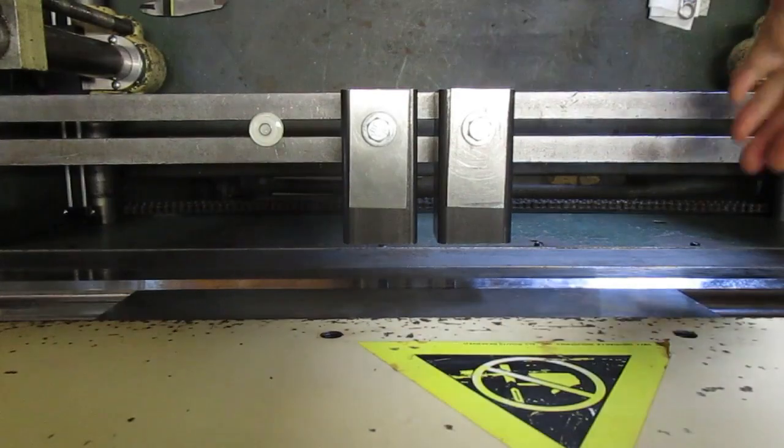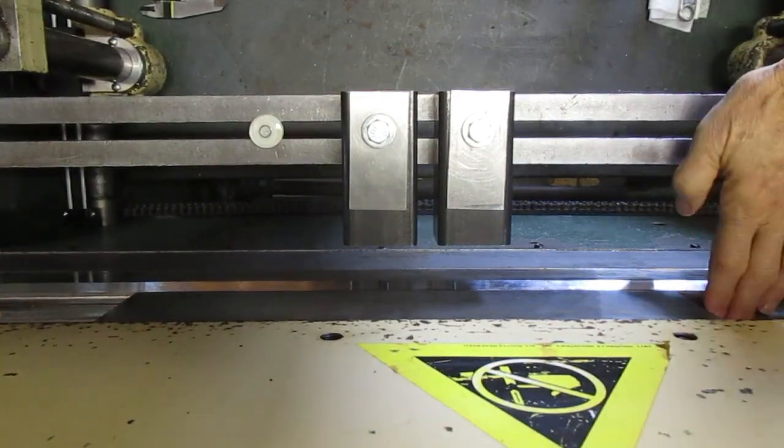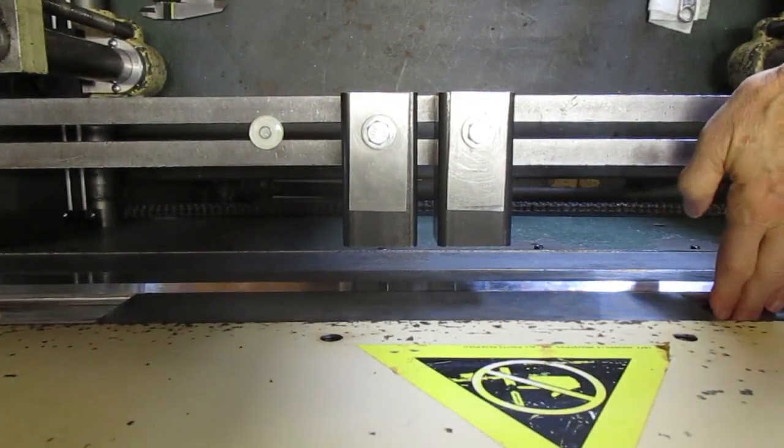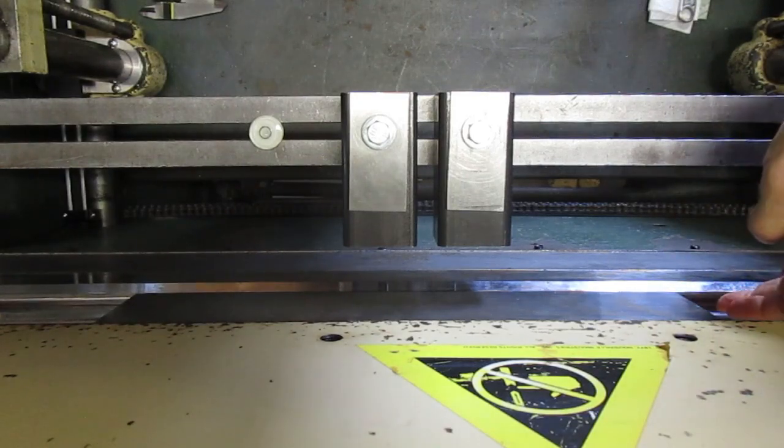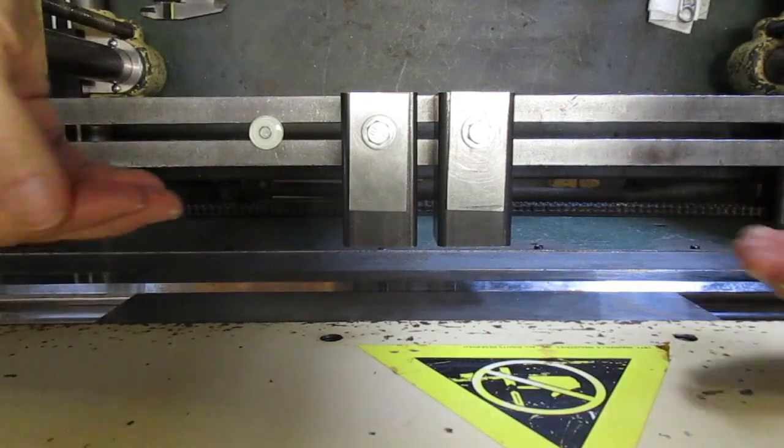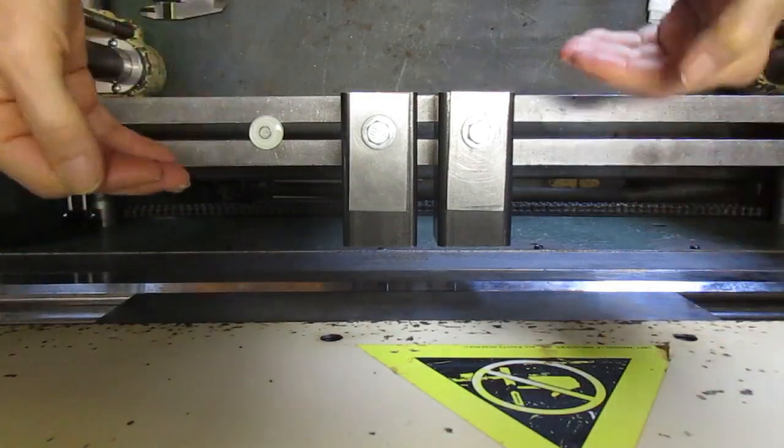Here's a trick you can use to make sure that your upper die and lower die are in proper registration. If the upper die center, the bend center, and the lower die are a little bit off, when the die comes down it's going to shift.